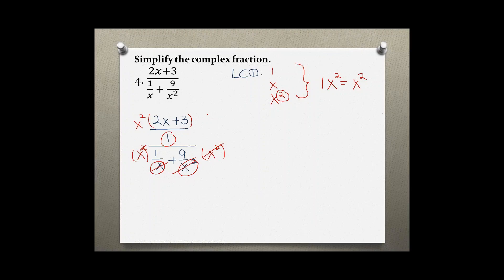Now I have to multiply together the leftover numbers, but in this case, because I have two terms, I need to use distributive property. So x squared times 2x gives me 2x cubed, and then x squared times 3 gives me 3x squared.